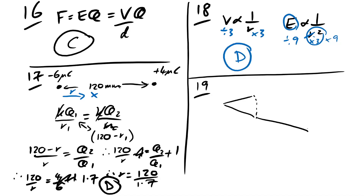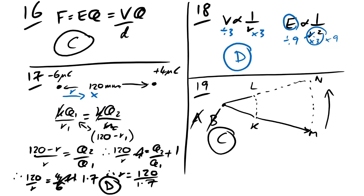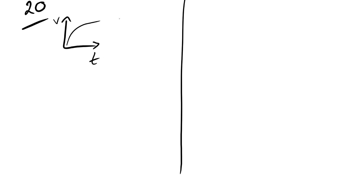Question 19: what is true about the equipotential setup? A: work done moving electron from M to K equals M to L — no, because L to K is an equipotential, so no work is done along it, meaning the total isn't the same magnitude. B: no work done from M to N — true, it's along an equipotential. C and D involve longer field lines requiring work. So no work is done moving an electron from M to N. Answer is B. Question 20: uncharged capacitor starts to charge. Voltage increases over time while current starts large and decreases. Answer is D.